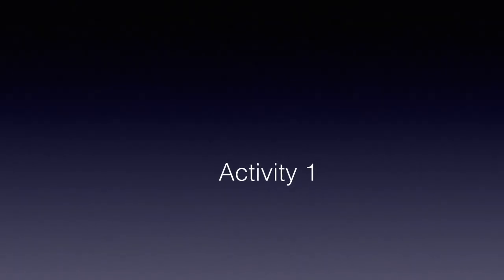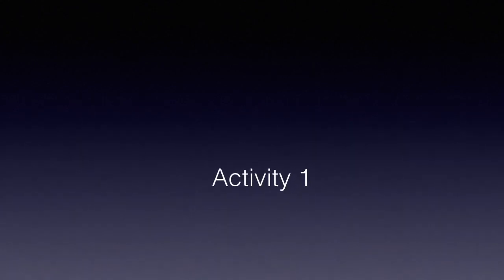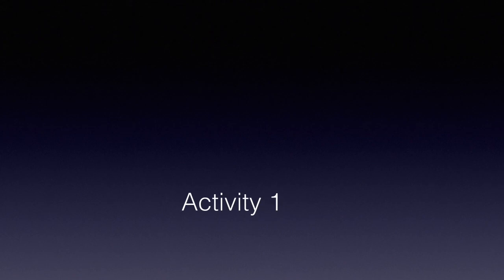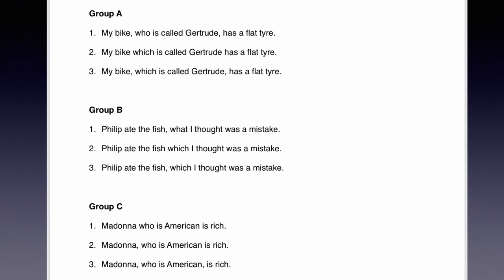Please now do activity one in the document on StudIP. You will see that there are five groups of sentences — Group A, B, C, D, and E. Each group contains three sentences, and in each group only one sentence is possible. So do that now, please. And then we will go through the answers. I hope you've noticed that in all five questions, the correct sentence is sentence number three.